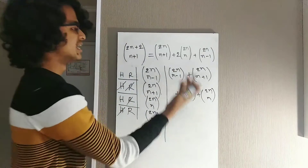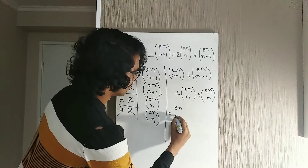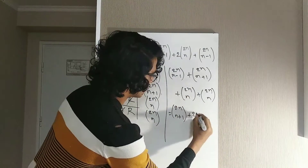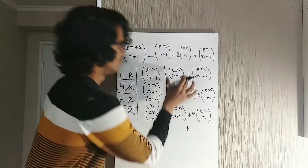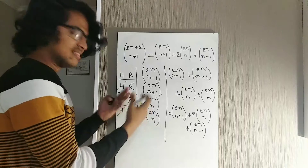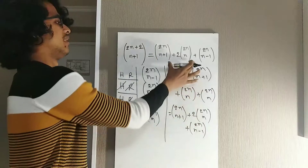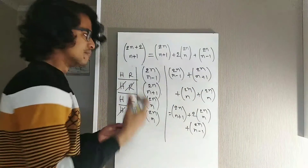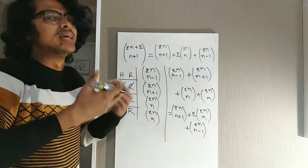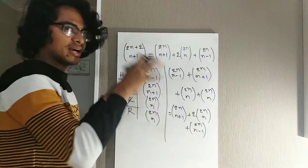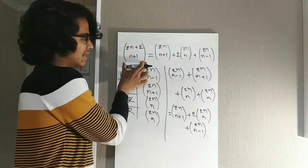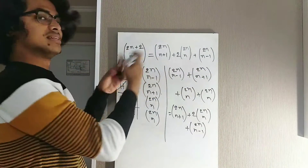Let me rearrange that total. We have C(2n, n+1) plus two times C(2n, n) — since there are two terms of C(2n, n) — plus C(2n, n-1). This expression is exactly the same as the right-hand side of the identity. Since we counted the same thing — the number of ways to choose the team from 2n+2 players — in two different ways, they must be equal. The proof is complete.